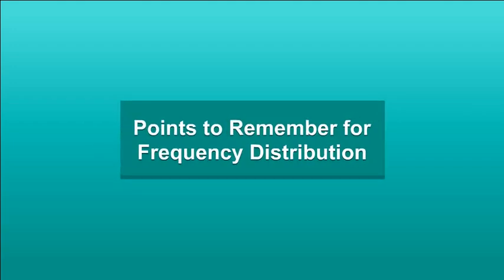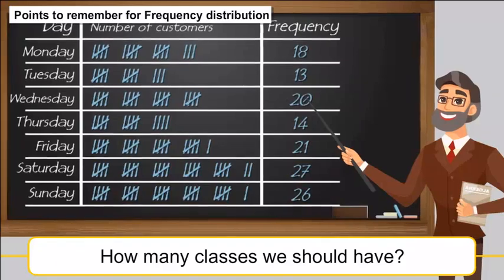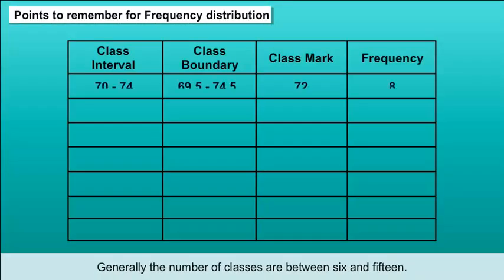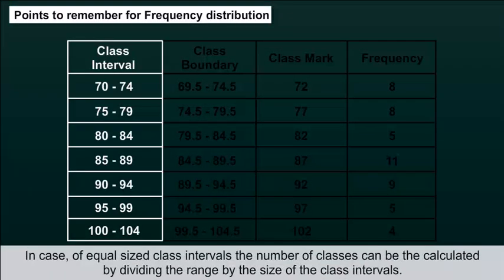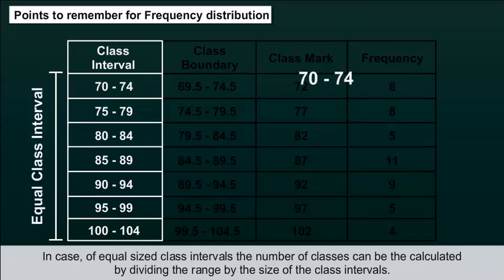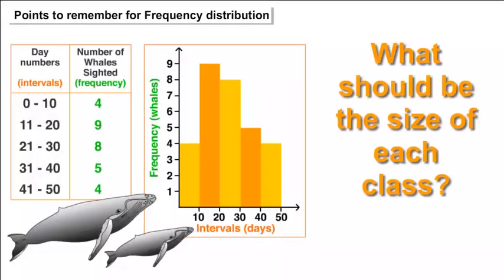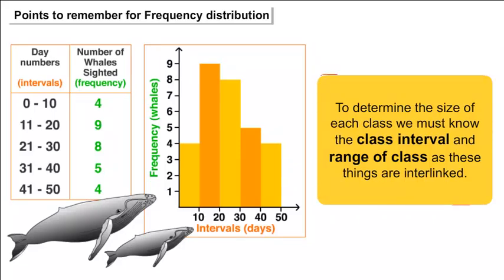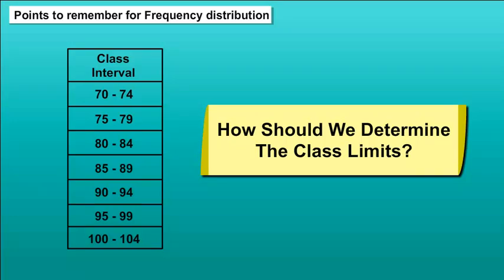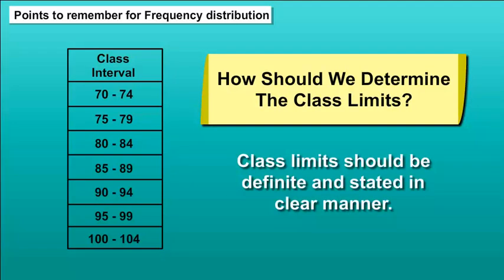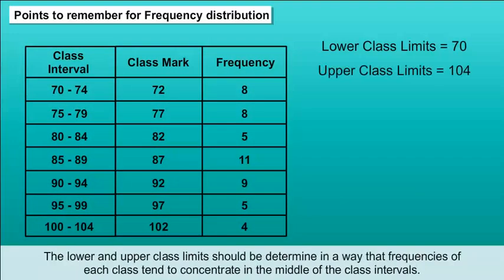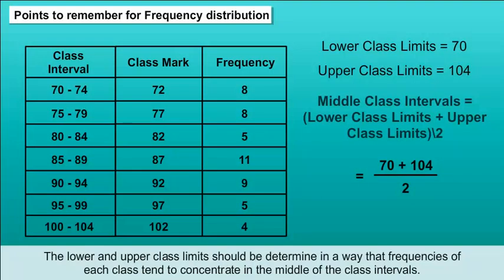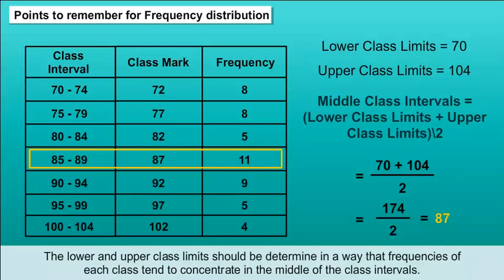Points to remember for frequency distribution: How many classes should we have? Generally, the number of classes is between 6 and 15. For equal sized class intervals, the number of classes can be calculated by dividing the range by the size of the class intervals. The size of each class depends on the class interval and range, as these are interlinked. Class limits should be definite and stated clearly, determined so that frequencies of each class tend to concentrate in the middle of the class intervals.